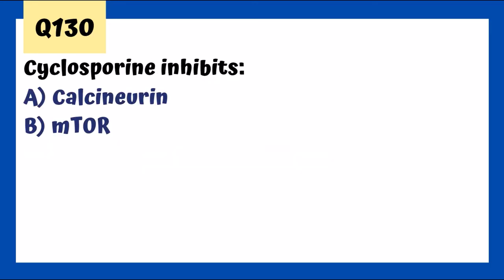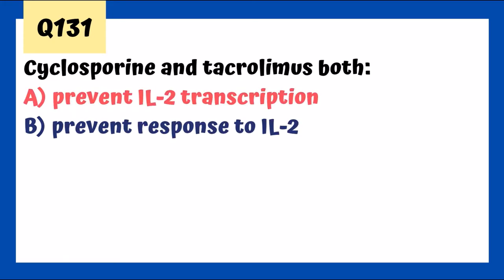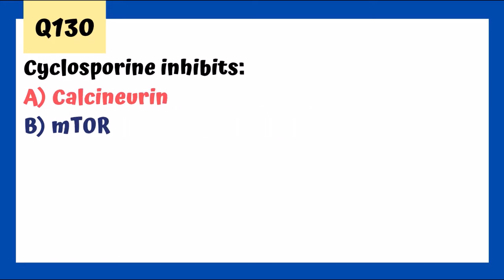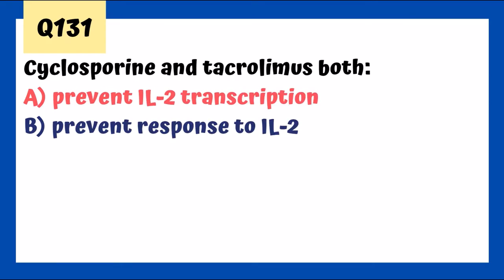Cyclosporin inhibits calcineurin — calcineurin plays a key role in regulating transcription of NFAT, important for T-cell activation by leading to IL-2 transcription. Both cyclosporin and tacrolimus prevent IL-2 transcription through inhibiting calcineurin. Sirolimus blocks the response to IL-2 by inhibiting mTOR — how IL-2 receptor communicates. Tacrolimus toxicity includes nephrotoxicity and neurotoxicity; gingival hyperplasia and hirsutism are seen with cyclosporin, not tacrolimus.